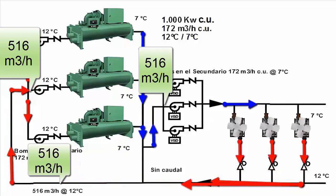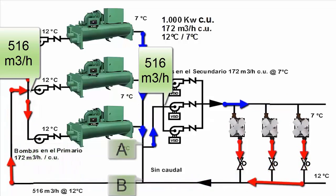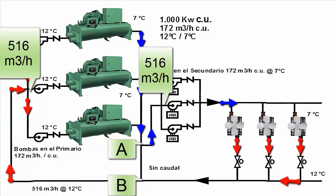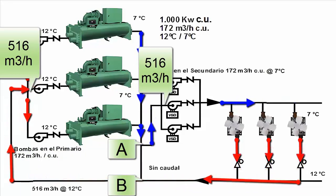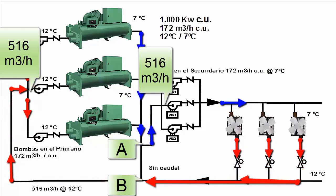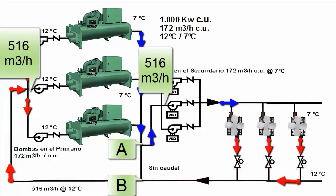The part from point A to point B is a connection that, in this case, has zero flow, as all the water leaving the chillers is directed to the building, and there is no excess chilled water.